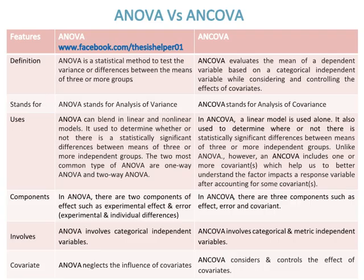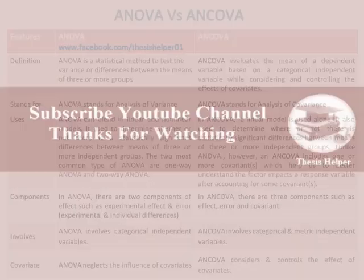ANOVA involves categorical independent variables, while ANCOVA involves categorical and metric-independent variables. ANOVA neglects the influence of covariates, while ANCOVA considers and controls the effect of covariates.